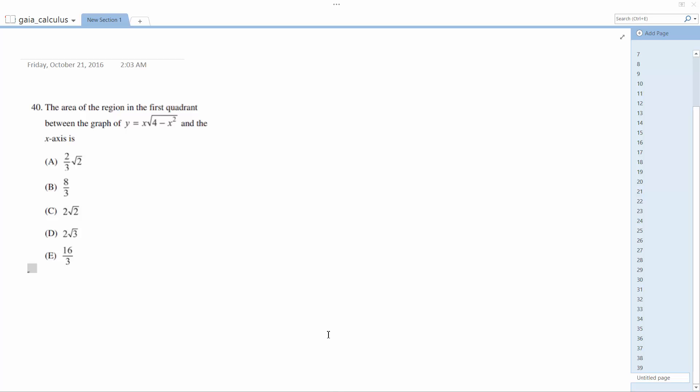Alright, so we want to solve this. I'm going to start off by using u-substitution. So u is going to be equal to 4 minus x squared. du is going to be equal to negative 2x dx.